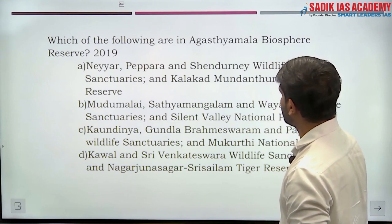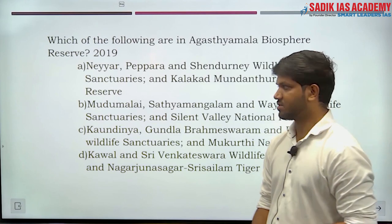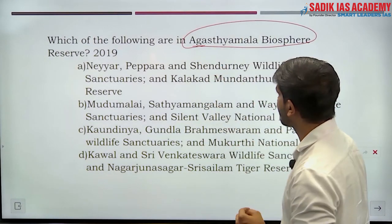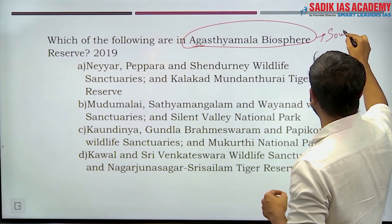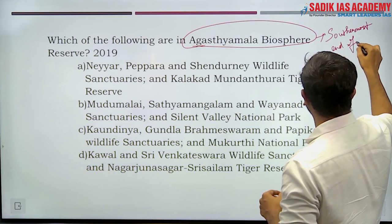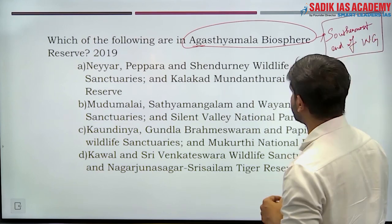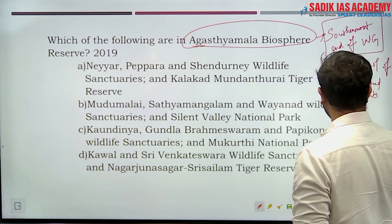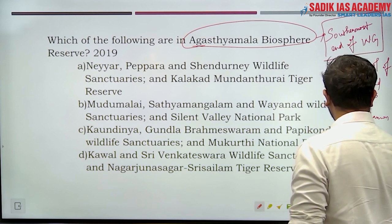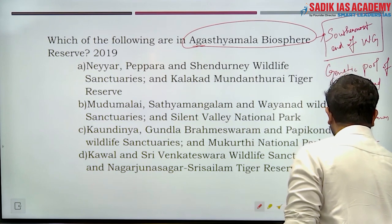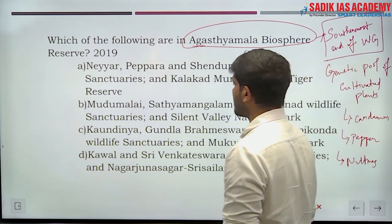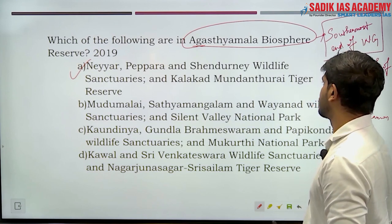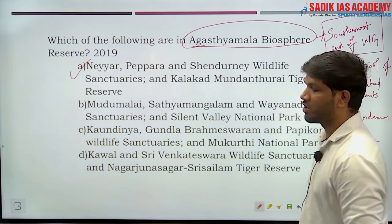Next question: which are the protected areas in the Agasthyamalai Biosphere Reserve? Agasthyamalai is present at the southernmost end of the Western Ghats and is regarded as a genetic pool of cultivated plants like cardamom, pepper, and nutmeg. The answer is Neyyar, Peppara, Shendurney Wildlife Sanctuaries, and Kalakkad-Mundanthurai Tiger Reserve.